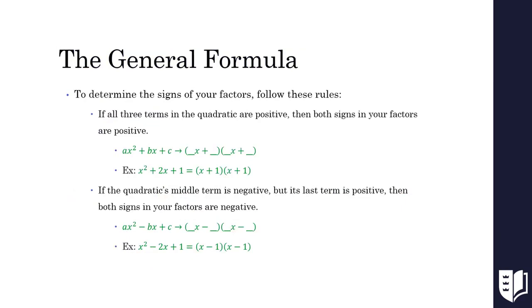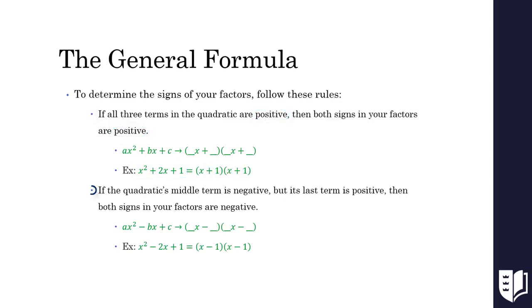Once we have the terms of our binomials, we need to find the signs of our binomial factors. We can do this by looking at the signs of the original quadratic and the terms we just found. If all three terms in our quadratic are positive, then both signs in our binomials are also positive. When factoring x squared plus 2x plus 1, we know that both factors will be positive because the quadratic is positive. If the middle term of our quadratic is negative but the last term is positive, then both signs in our binomials are negative. When factoring x squared minus 2x plus 1, we know that both signs in our factors will be negative because the middle term is negative while the last term is positive.